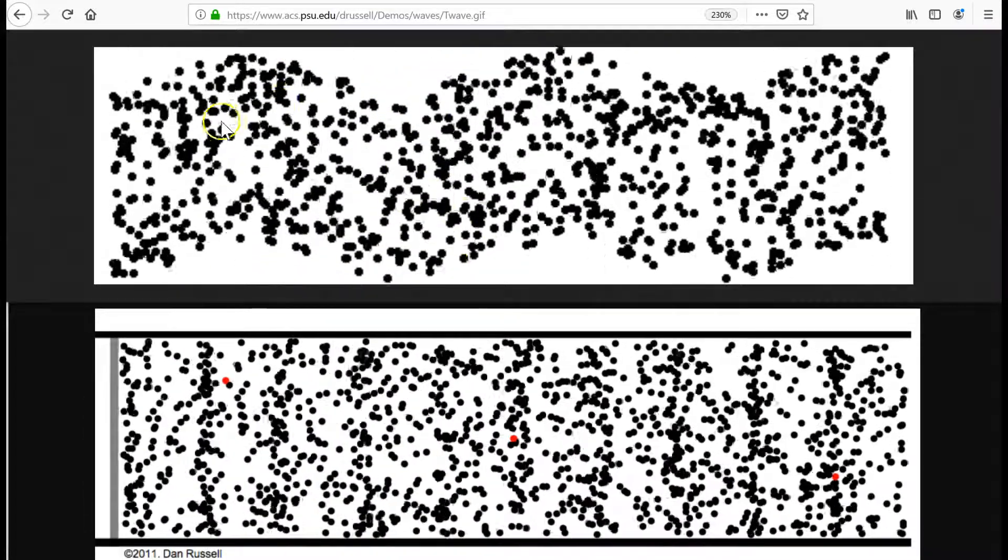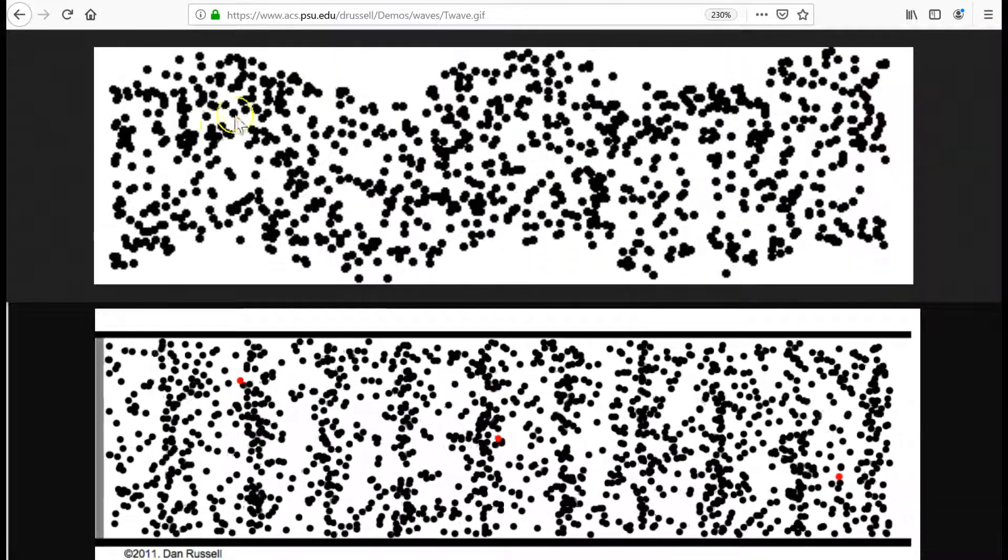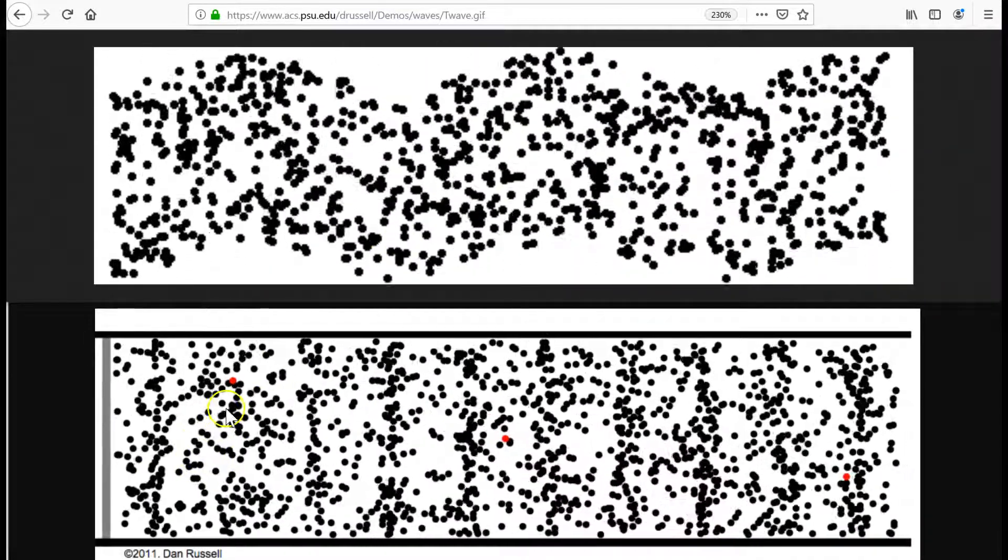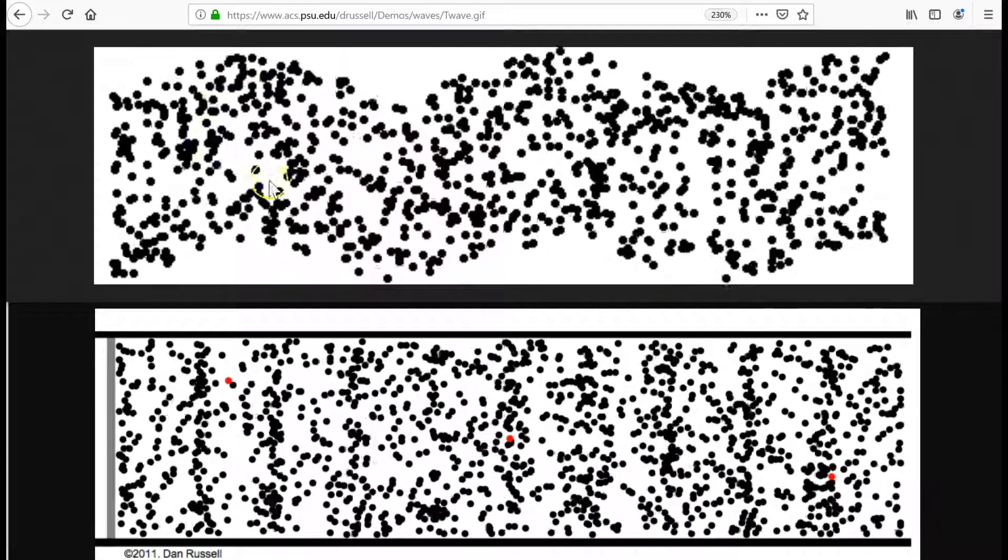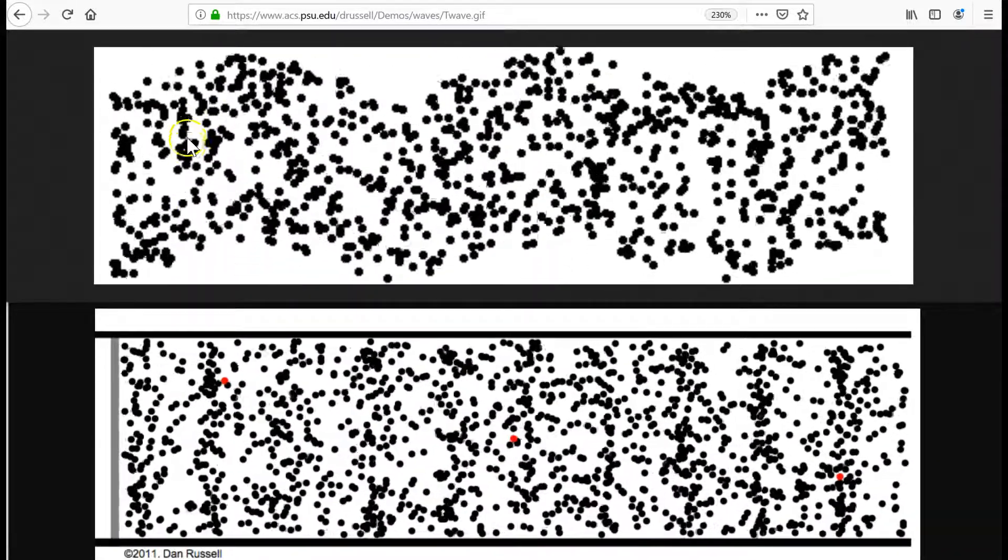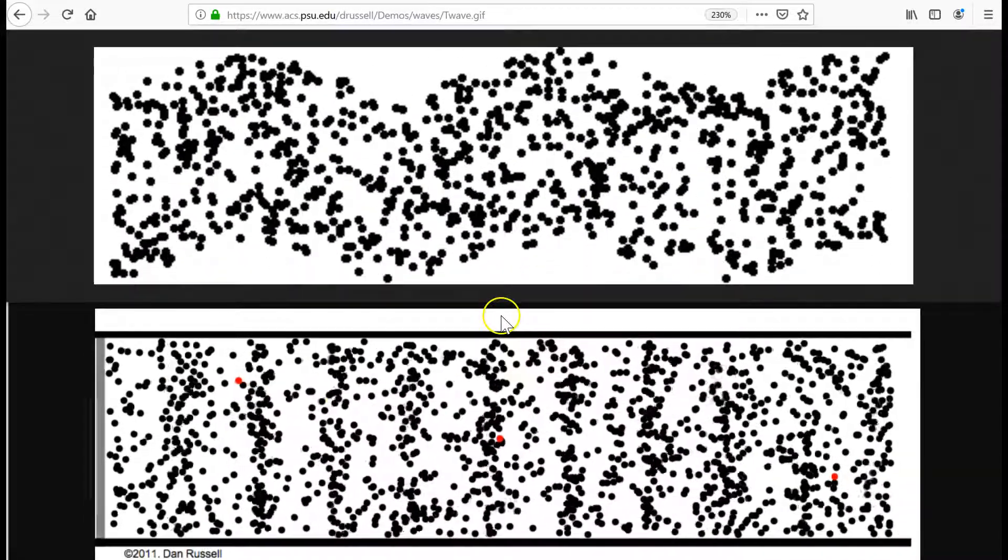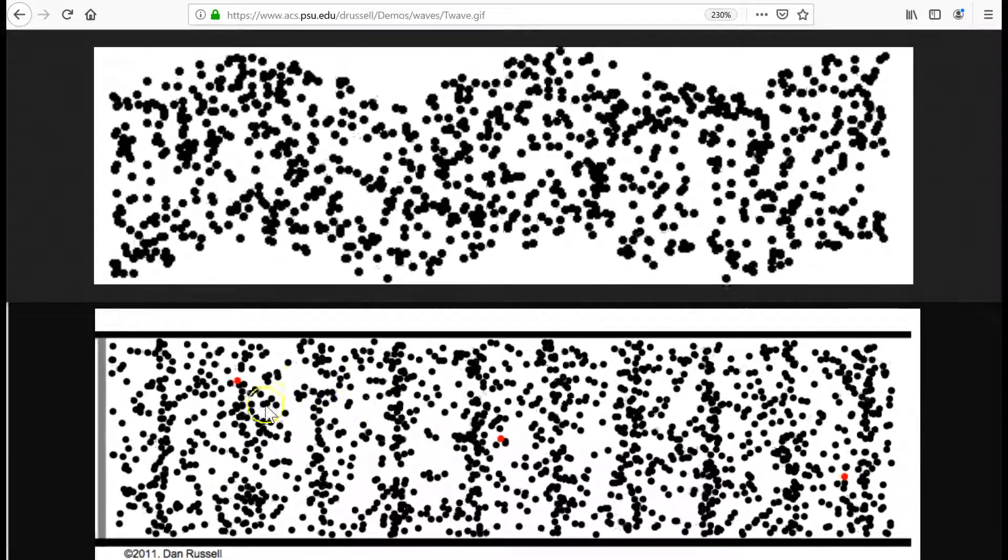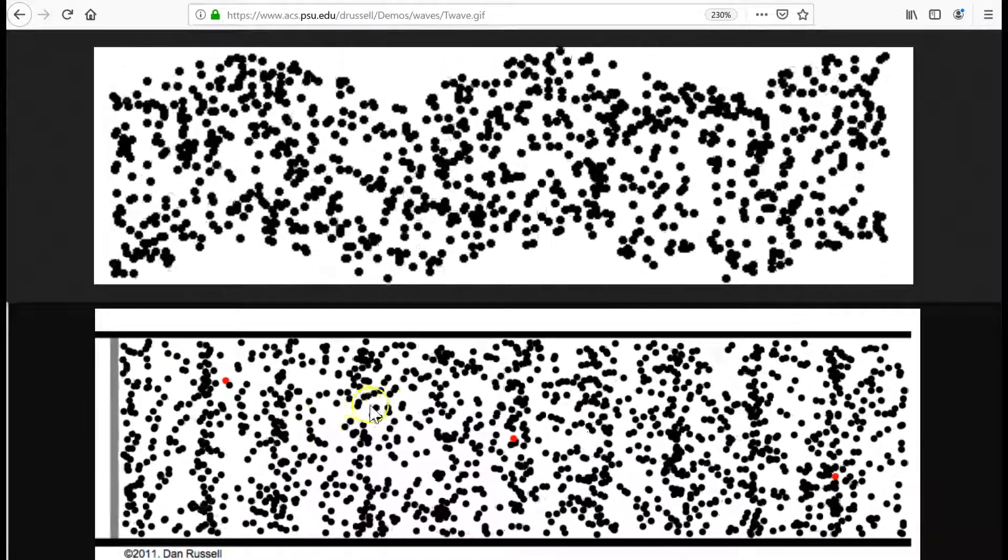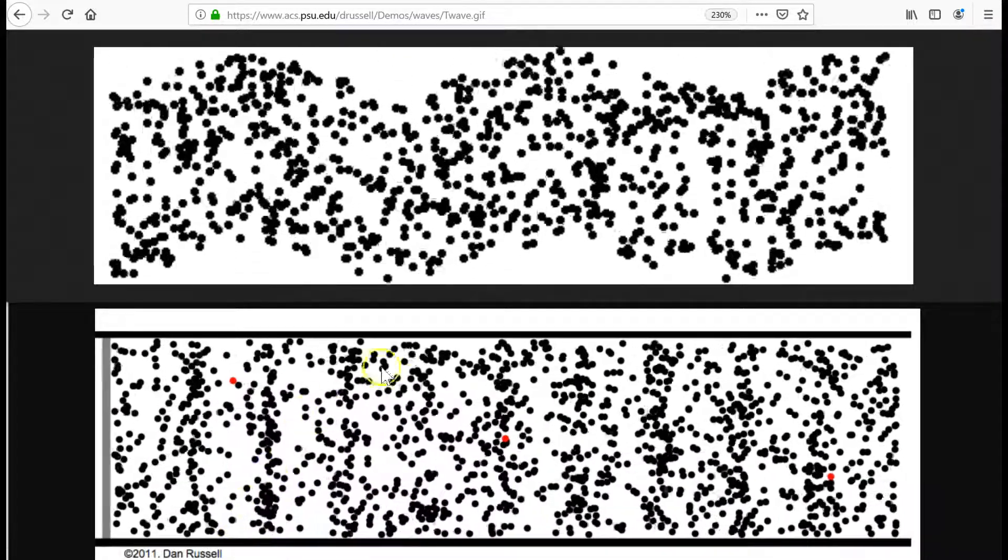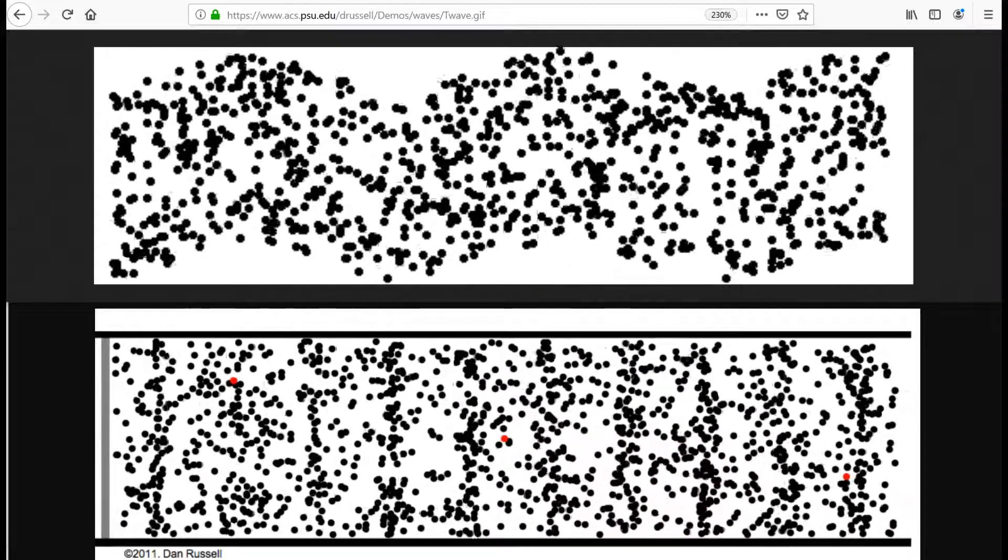Another way to think about the difference, on the top, energy is being transferred to the right, that's where the wave shape travels. Same as the bottom, energy is transferred to the right. But on the top, the particles oscillate up and down, perpendicular to the direction of energy transfer. On the bottom, longitudinal, the particle oscillations are left-right, parallel to the energy transfer. This is how we define the difference between transverse and longitudinal waves.